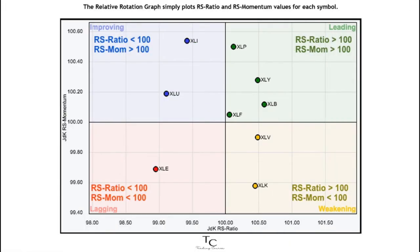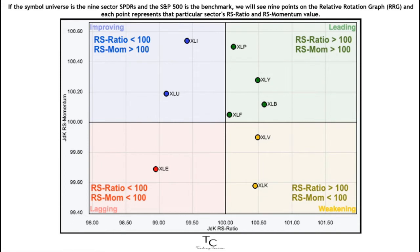The relative rotation graph simply plots RS ratio and RS momentum values for each symbol. If the symbol universe is the nine sector SPDRs and the S&P 500 is the benchmark, we will see nine points on the relative rotation graph (RRG), and each point represents that particular sector's RS ratio and RS momentum value.